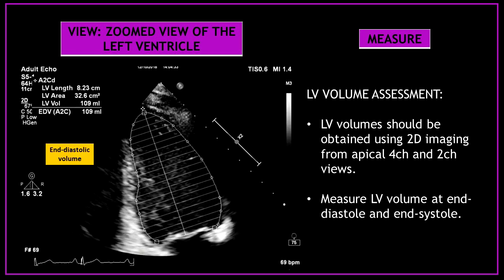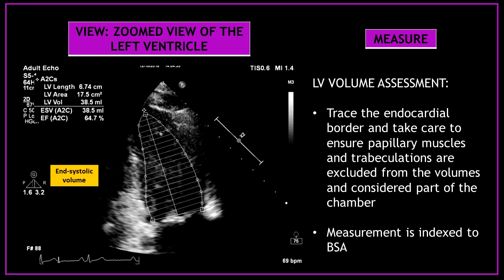In this same view, assess the left ventricular volume. Left ventricular volumes should be obtained using 2D imaging from apical 4 chamber and 2 chamber views. Measure the left ventricular volume at end of diastole and end of systole. Trace the endocardial border and take care to ensure papillary muscles and trabeculations are excluded from the volumes and considered part of the chamber. All measurements need to be indexed to body surface area.